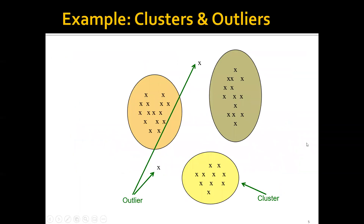For example, let's say that we have a lot of points, and these points can be grouped into three clusters: cluster one, cluster two, and cluster three. And there might also be outliers, which are these two points.